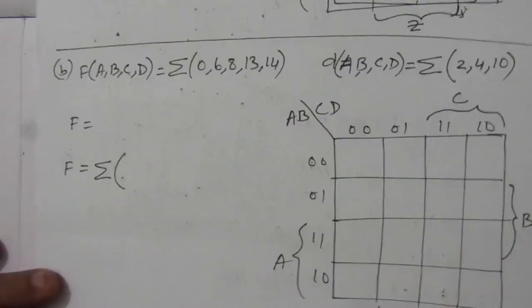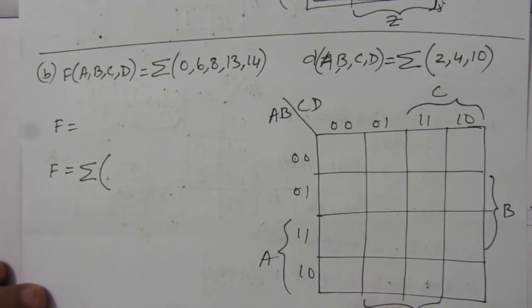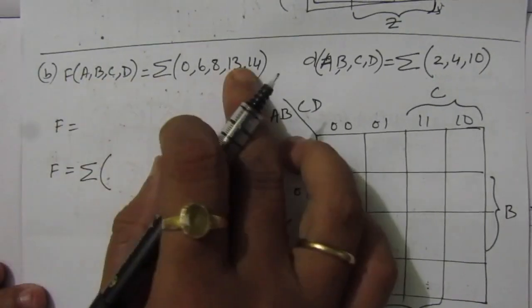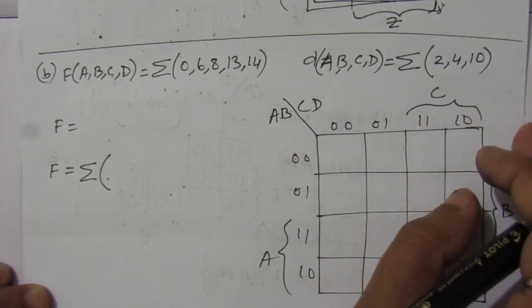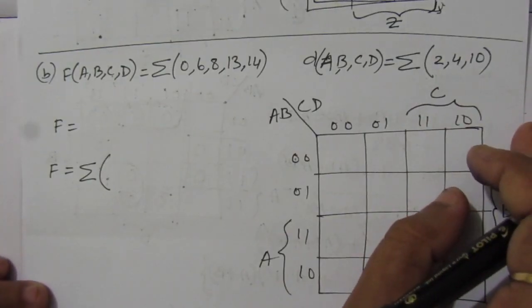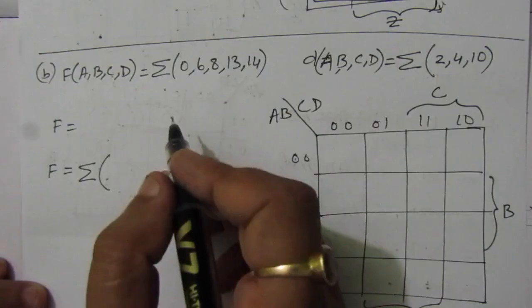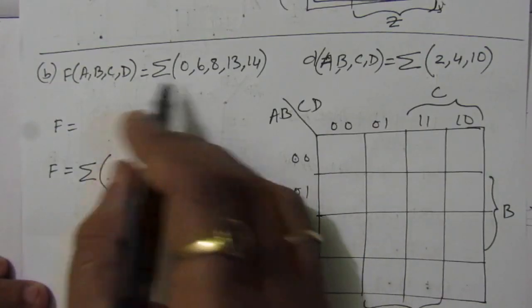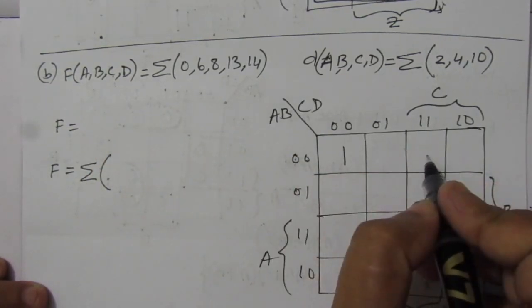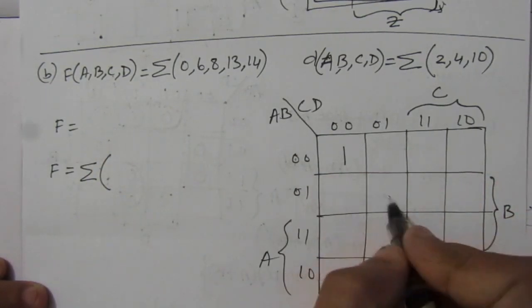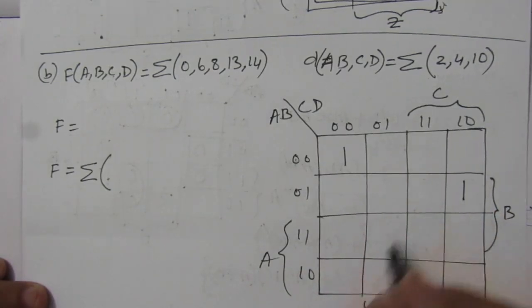Now let us solve the second part of the problem. In the second part, we are given with this function and these are the don't care conditions. Now let us fill up this four variable map. We are given with minterms 0, 6, 8. Positions 0, 1, 2, 3, 4, 5, 6, 7 and 8, 9, 10, 11, 12, 13, 14, 15 are mapped.